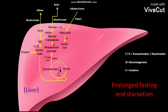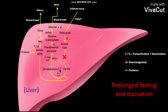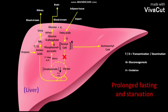Due to the lack of oxaloacetate, the entry of acetyl-coenzyme A into the TCA cycle is prevented. As a result, the concentration of acetyl-coenzyme A in the liver increases. Due to this increased level, the acetyl-coenzyme A itself is converted into acetoacetyl-coenzyme A, which is then converted into ketone bodies.